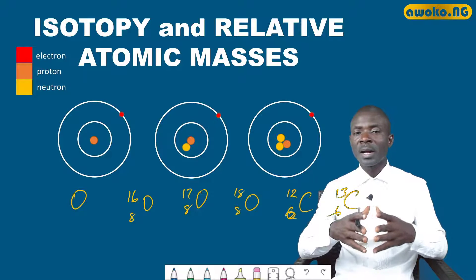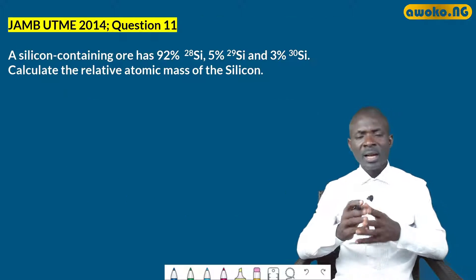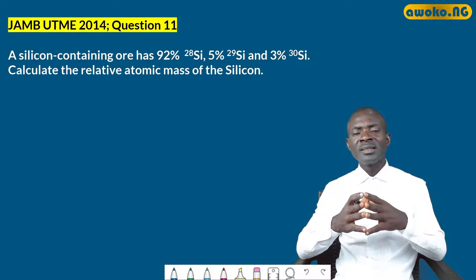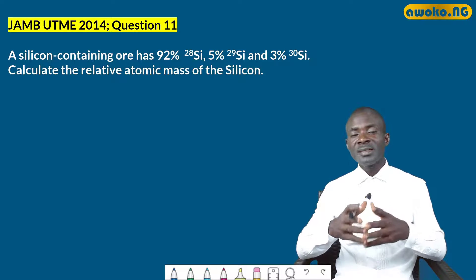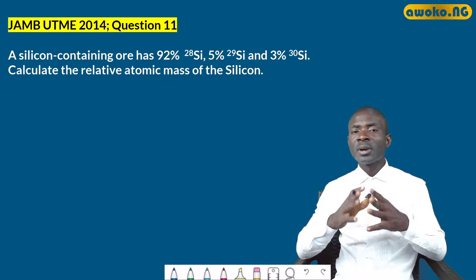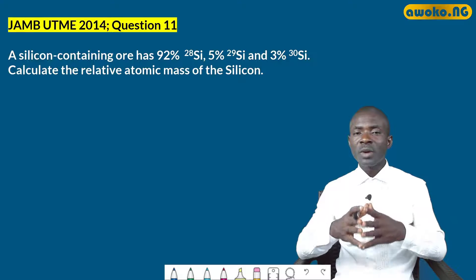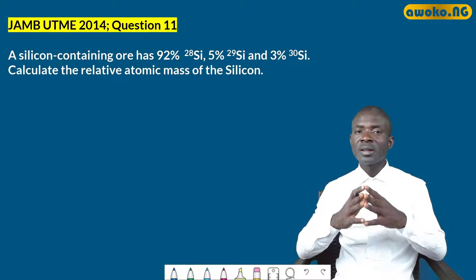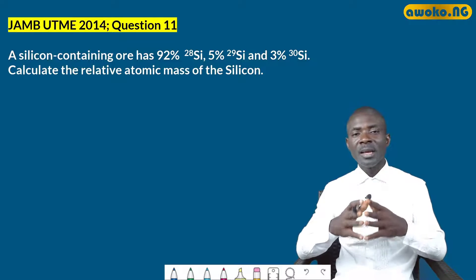Isotopes are atoms having the same atomic number but different mass numbers due to differing neutron counts. The relative atomic mass of an element is defined as the number of times the mass of one mole of an element is heavier than 12 grams of carbon. Relative atomic masses are not whole numbers because elements exist as isotopes.